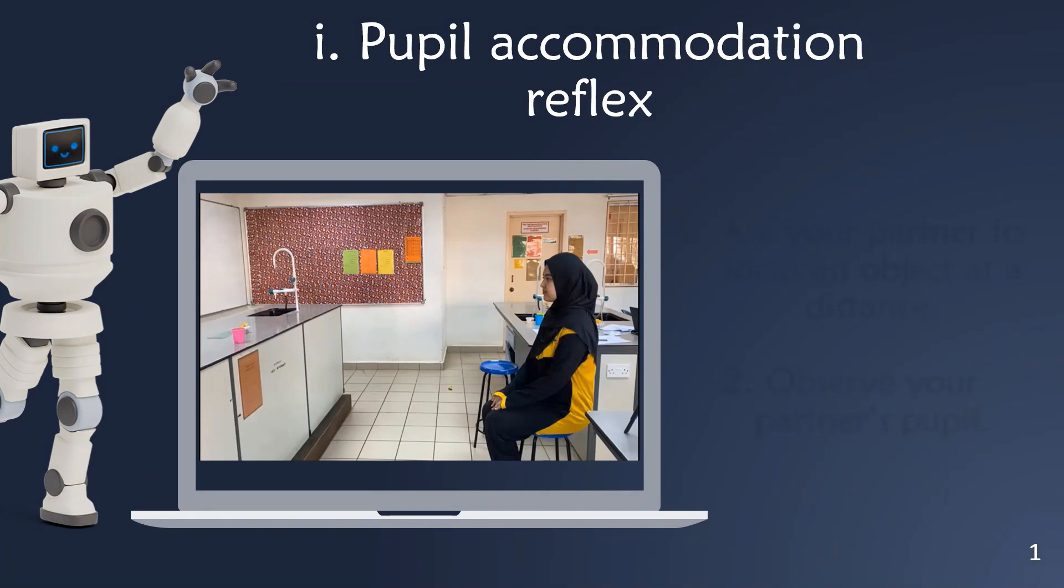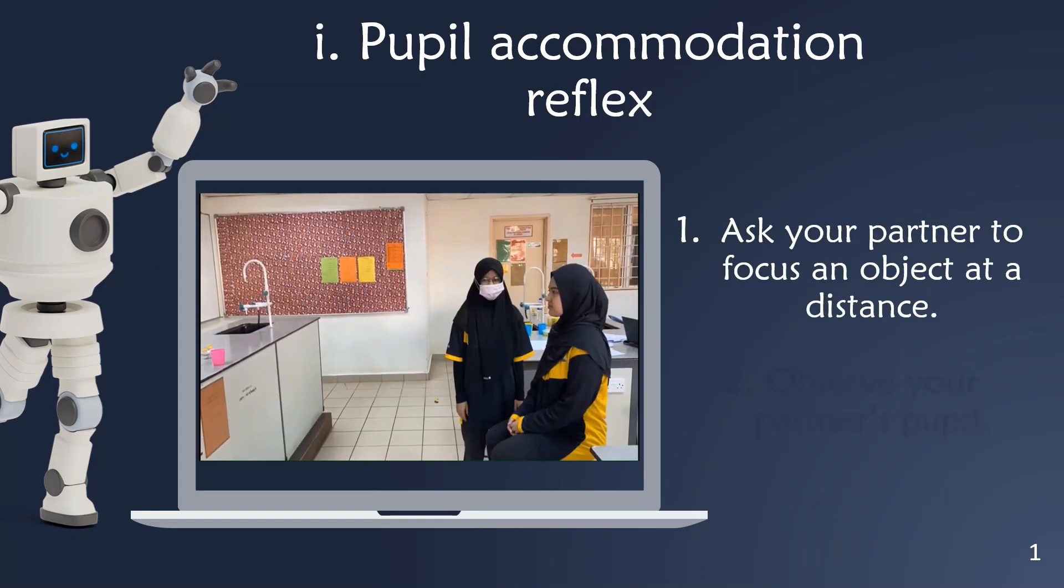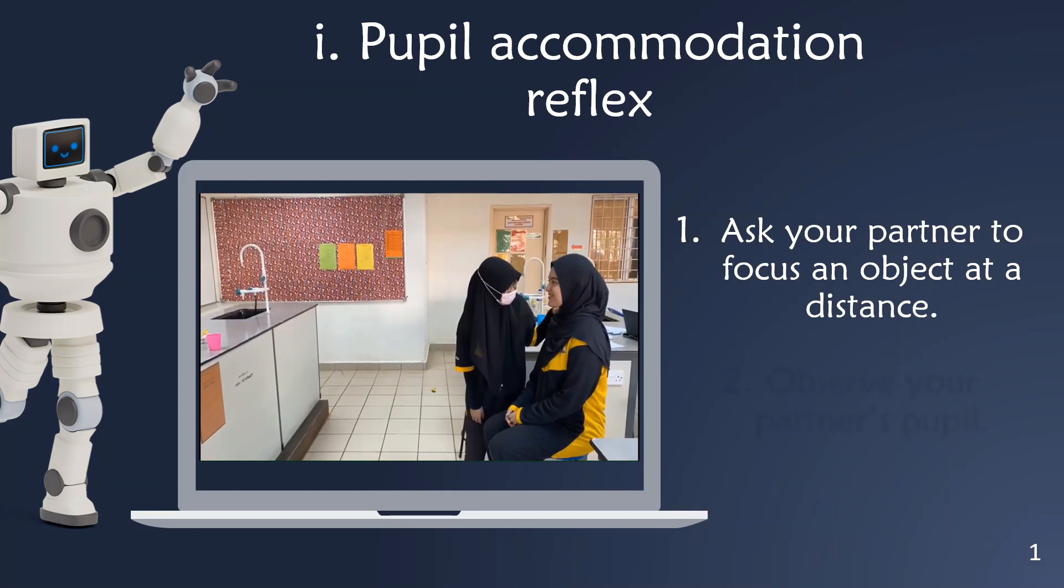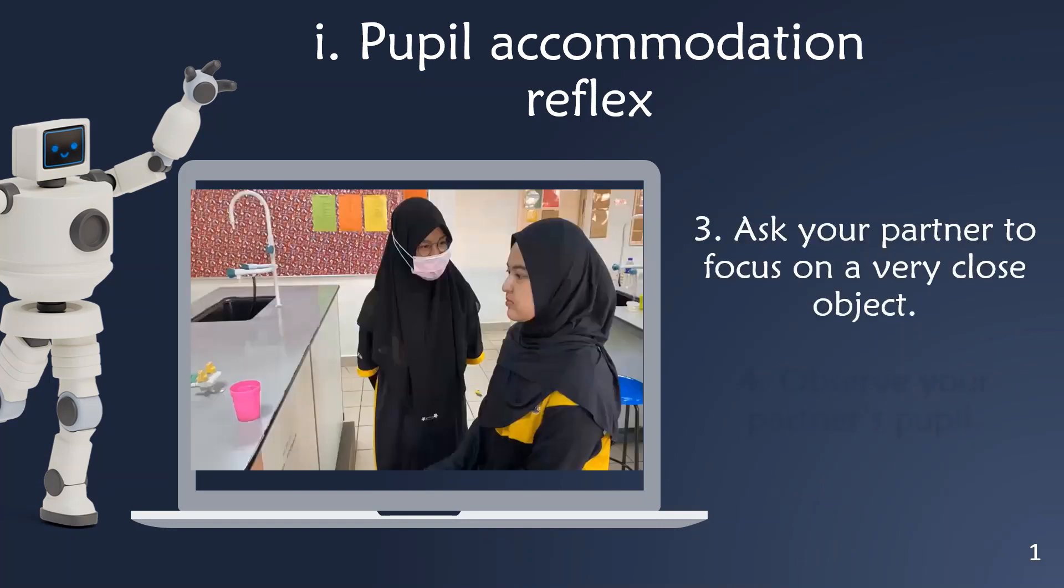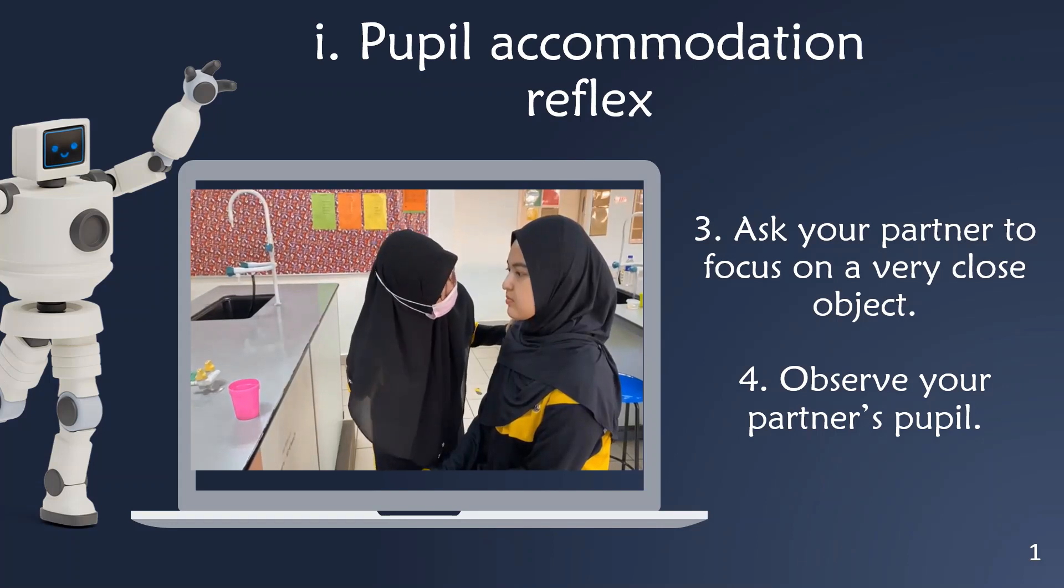To observe pupil accommodation reflex, firstly, ask your partner to focus on an object at a distance. Next, observe your partner's pupil. Next, ask your partner to focus on a very close object. Observe your partner's pupil.